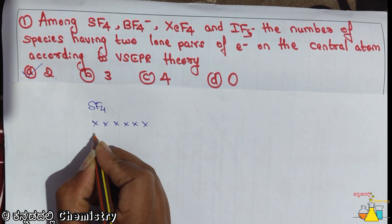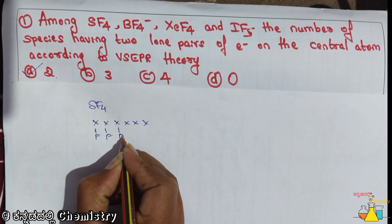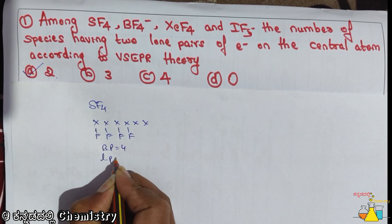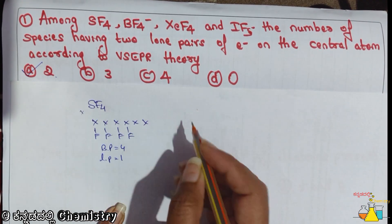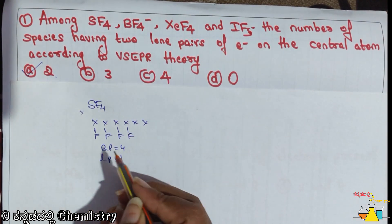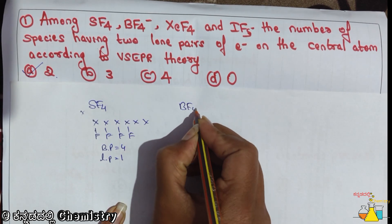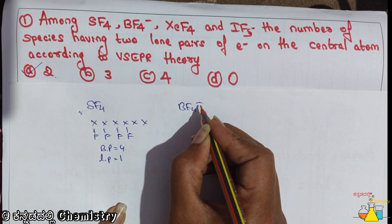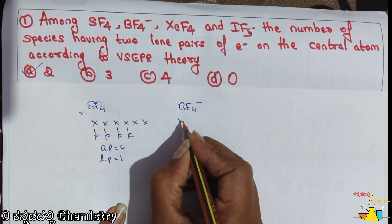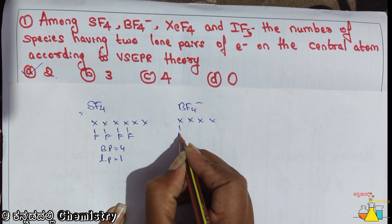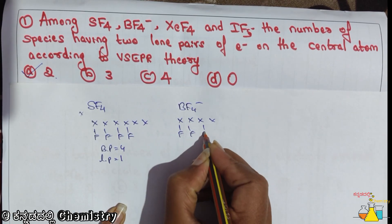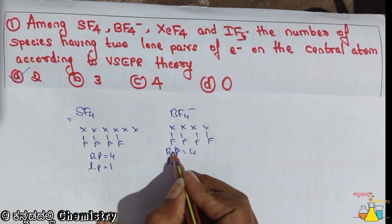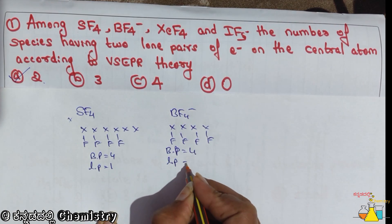Fluorine octet is 6. So, 1, 2, 3, 4, 5, 6. Fluorine count is 4, then 1, 2, 3, 4. 4 minus. If the boron is 3, it will be extra 1 minus, so plus 1. That is 2, 3, 4. The bond pairs is equal to 4. The lone pairs is 0.